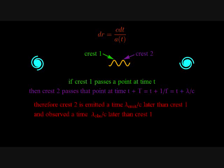In particular, crest 2 is emitted at a time lambda sub-emit over c after crest 1 is emitted, and crest 2 is observed at a time lambda sub-observed divided by c after crest 1 is observed.